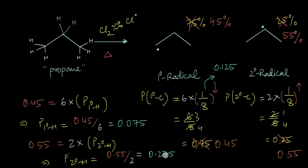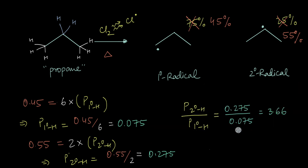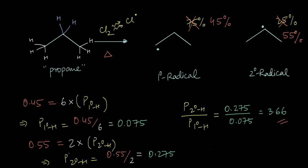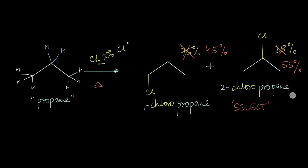So in reality, the probability of a chlorine radical abstracting a second-degree hydrogen from propane is much higher than for a first-degree hydrogen. Dividing these probabilities, abstracting a second-degree hydrogen is 3.66 times more likely than a first-degree hydrogen. This selectivity results in greater-than-expected second-degree radicals, ultimately leading to 2-chloropropane as the major product.